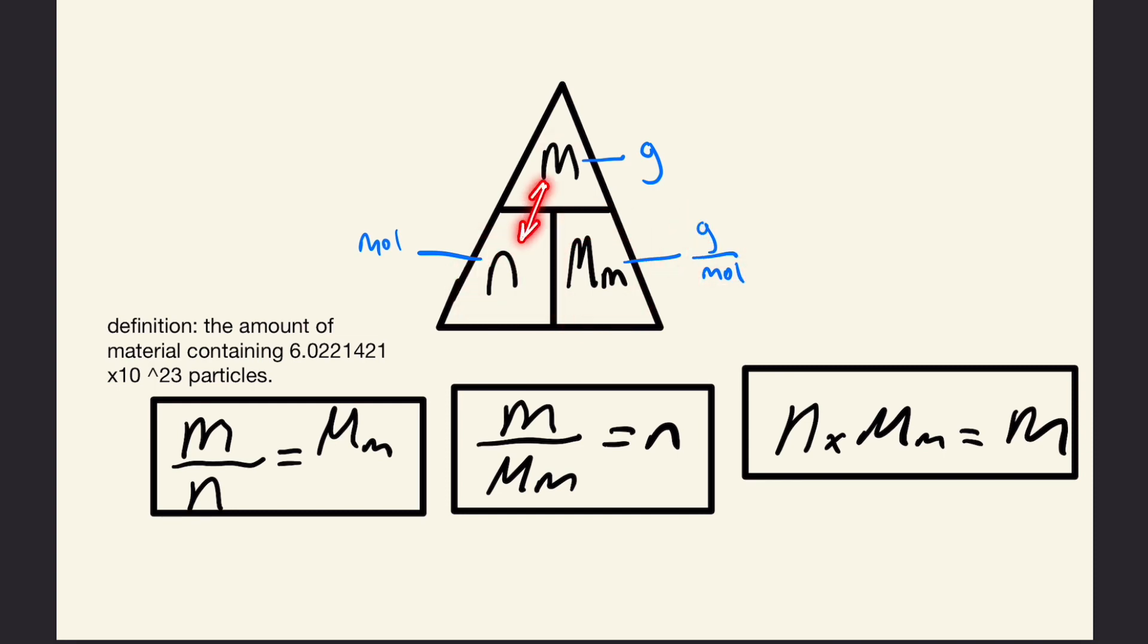The way this triangle works is that if we divide mass by moles, we end up with the remaining term, which is molar mass. This is shown in this box over here. Same thing goes if we divide mass by molar mass, we're left with moles.